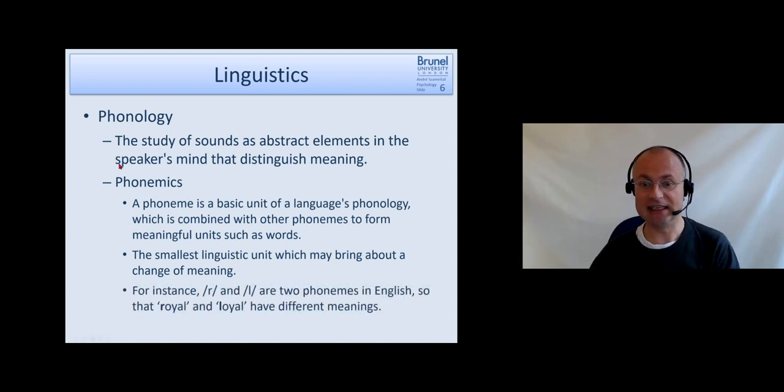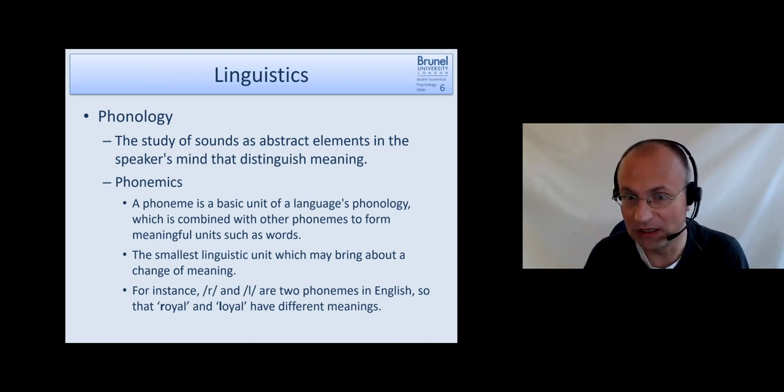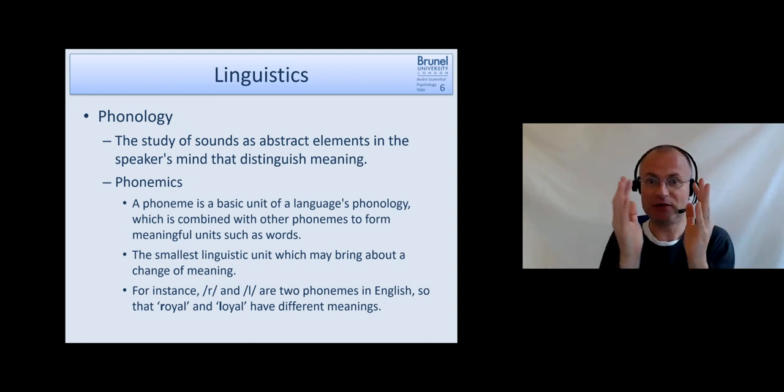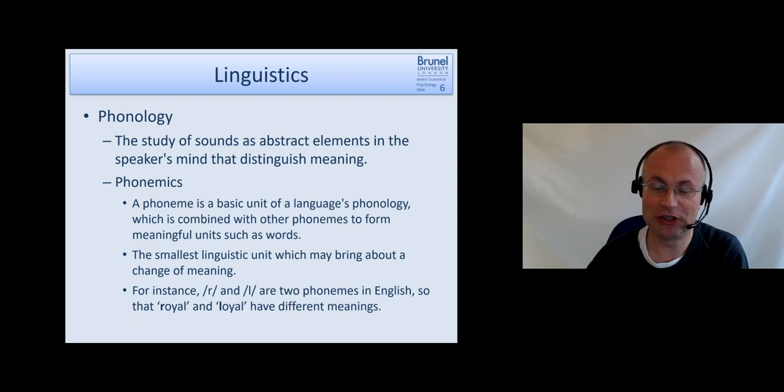To give you an example of such a phoneme—the smallest unit which may bring about a change of meaning: In English we have the phoneme R and the phoneme L, and they have different meanings, so that 'royal' and 'loyal' are two different words. In other languages, R and L may not be two different phonemes, and therefore if we exchange the R for an L, we don't necessarily bring about a change of meaning. That's why people from some language backgrounds have difficulties distinguishing R and L, because in their language these two phonemes do not bring about a change in meaning. For a phoneme to be defined as a phoneme, it must be the case that when we change it, we change the meaning of the word.